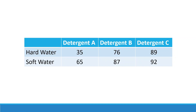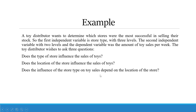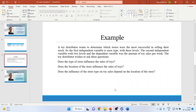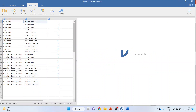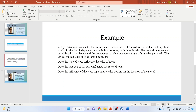When we have two categorical variables and one continuous variable, we will have three hypotheses: first, column-wise according to the detergent; second, row-wise according to the type of water; and third, the interaction of water combined with detergent. Now we have another example — a toy distributor wants to determine which stores were most successful in selling their stock. The first independent variable is store type with three levels: variety store, department store, and discount toy store.